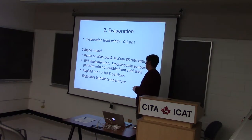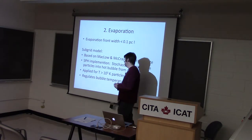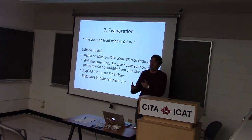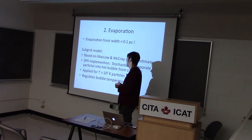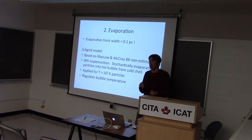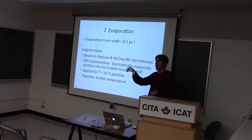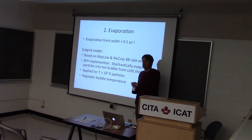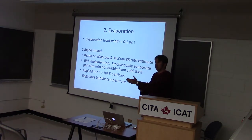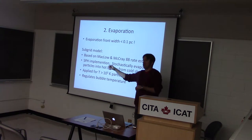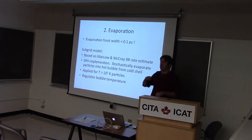To deal with that, we did a sub-grid model. McCray and McCray actually convert the conduction rate into an evaporation rate — a mass flux. So we did this stochastically: we have cold gas next to hot gas, and rather than gradually moving mass out, in a stochastic sense we said the probability of this much mass going over this timescale is such and such. We made sure that the average flow rate was the same, and we promoted entire particles at once from the shell into the hot bubble.